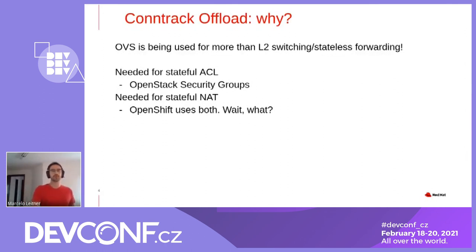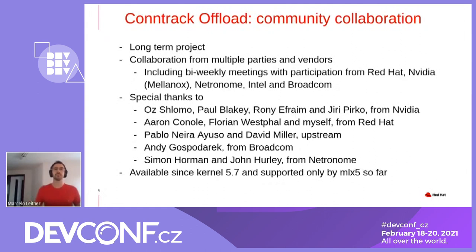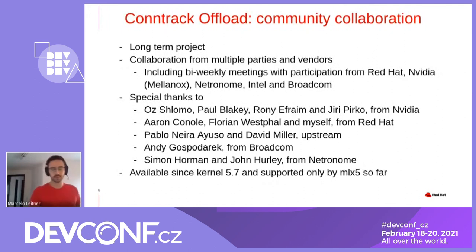Without Conntrack offload, we would limit where the OVS hardware offload could be used. So this now makes the solution whole. And this is a result of a big community collaboration — it was a really long-term project, years long. It consisted of collaboration from multiple parties and vendors, including weekly meetings with participation from Red Hat and NVIDIA, which was formerly known as Mellanox back then, Netronome, Intel, Broadcom, and special thanks goes to all these folks who helped one way or another, contributing with comments, code, and tests. Available since kernel 5.7 — it is there, it is upstream, you can use it. And it is also available on RHEL 8.3 as a tech preview, and it is only supported by the Mellanox 5 drivers so far.